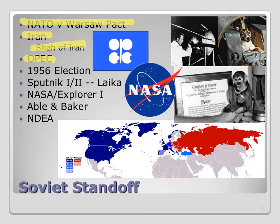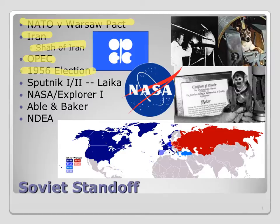That gets us to 1956 — politics happens again with another presidential election. This one will be a repeat of 1952 with the same two candidates. The Democrats will nominate Adlai Stevenson again, and the Republicans will re-nominate Dwight D. Eisenhower. Eisenhower will win another easy election because the economy is booming — and hopefully you've learned that people vote with their wallet. So Eisenhower wins again — four more years.